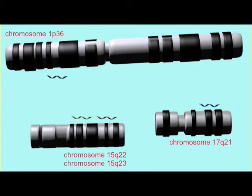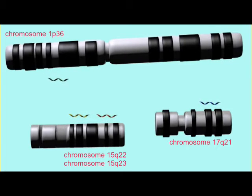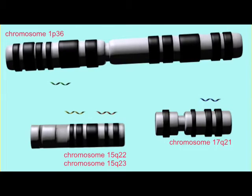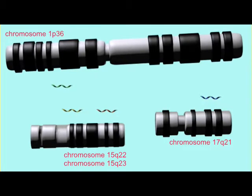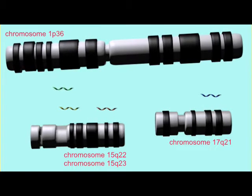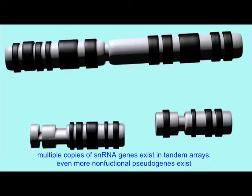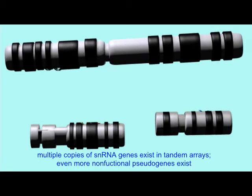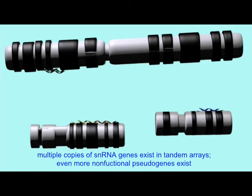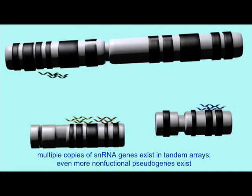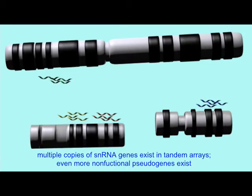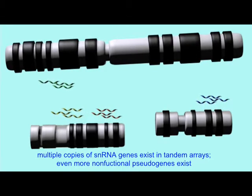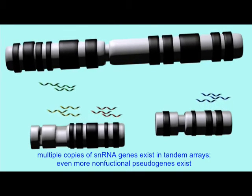Other snRNA genes are concentrated on other chromosomes, such as U2, found on chromosome 17q21, in many tandem arrays, and U5 and U6 on chromosome 15q22-23. The number of non-functioning pseudogenes can outnumber the functioning genes by factors of 15 to 30 times.